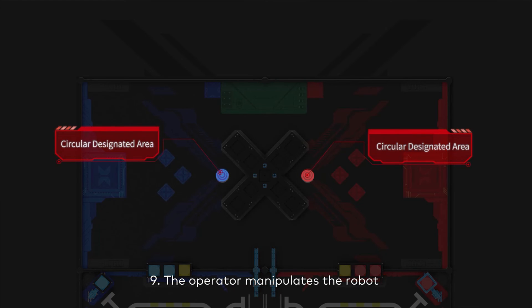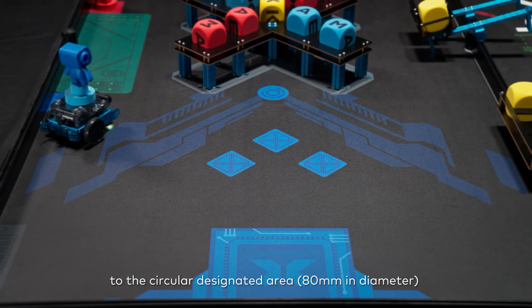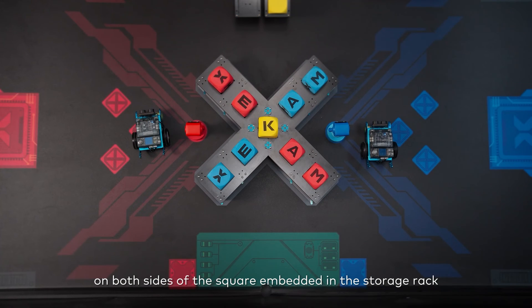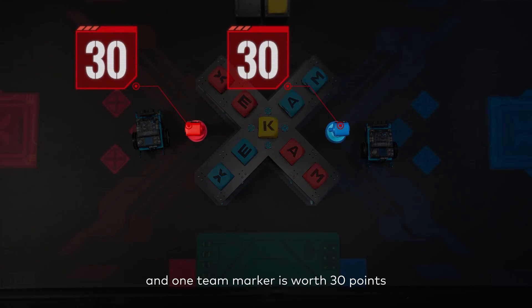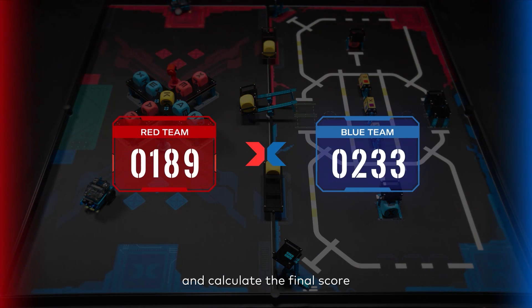The operator manipulates the robot to move the team marker to the circular designated area on both sides of the square embedded in the storage rack, and one team marker is worth 30 points. At the end of the match, robots of both sides shall stop immediately and calculate the final score.